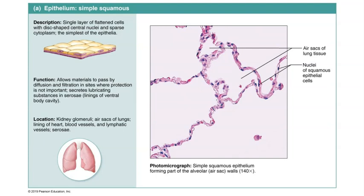Among other places, this tissue is found in the glomeruli of the kidney, which are the structures where filtration of the blood occurs. It's also found in the alveoli, or the air sacs of the lungs, where exchange of oxygen and carbon dioxide between the blood and the atmosphere occurs.